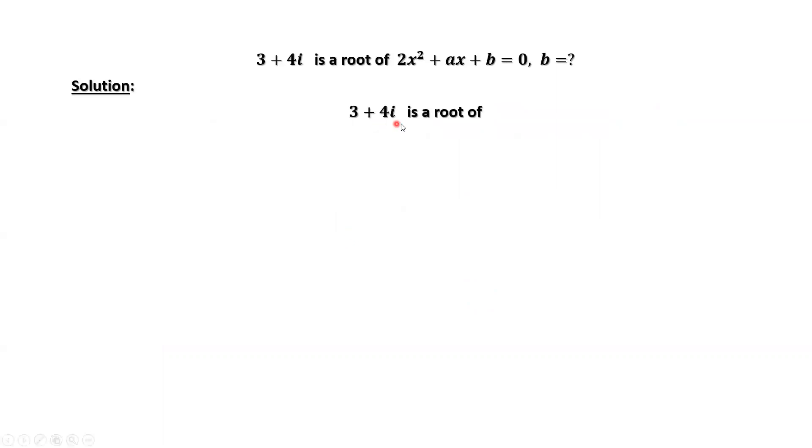3 plus 4i is the root of this quadratic equation. Based on this quadratic equation, we can use the quadratic formula to derive the two roots. We have one here. We can infer its conjugate, 3 minus 4i, is also a root. This is because of the quadratic formula.